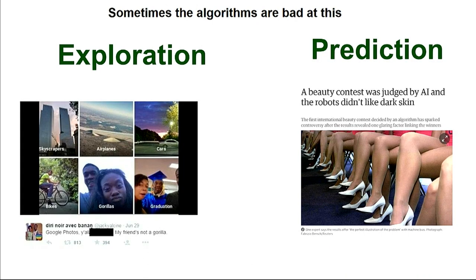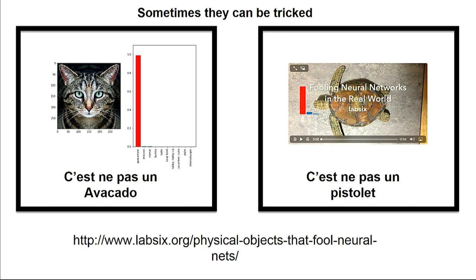Sometimes these machines don't get things quite right. On the left, we have an example of image identification which was identifying people as gorillas. On the right-hand side, we have a prediction algorithm which was predicting that only white people could win at beauty contests. We also have to be careful: if you know how the model is built, you can create data that confuses it. A picture of a cat the machine thinks is an avocado, a 3D model of a turtle the machine thinks is a gun. So we have to be careful about how we construct these models.